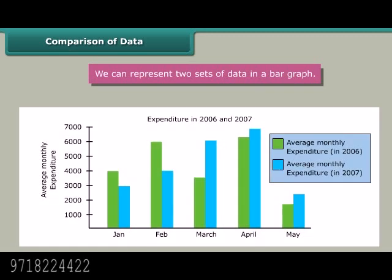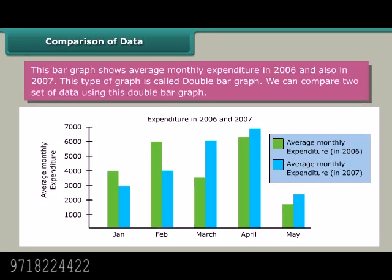Comparison of data: We can represent two sets of data in a bar graph. This bar graph shows average monthly expenditure in 2006 and also in 2007. This type of graph is called double bar graph. We can compare two sets of data using this double bar graph.